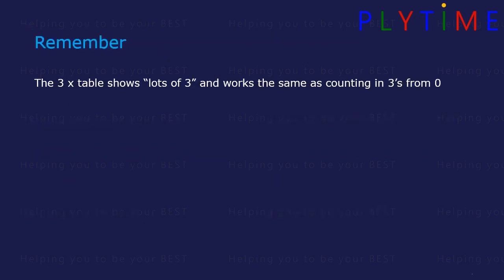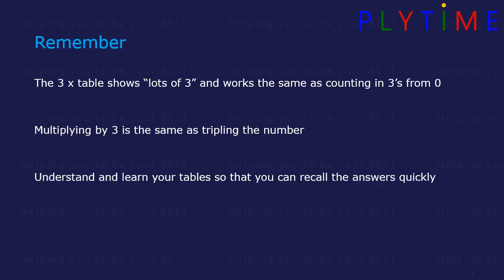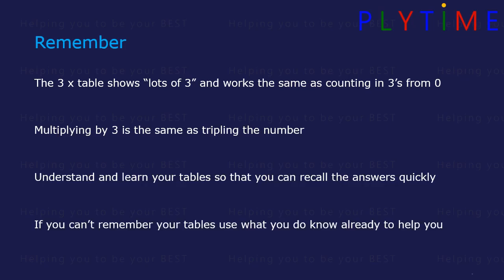Remember, the three times table shows lots of three and works the same as counting in threes from zero. Multiplying by three is the same as tripling the number. Understand and learn your tables so you can recall the answers quickly. If you can't remember your tables, you can use what you already know to help you.